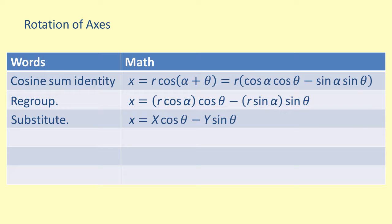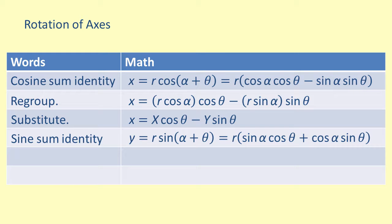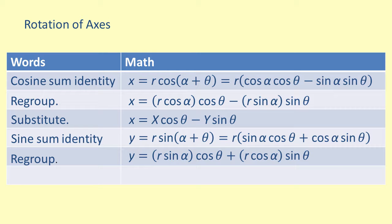We can then duplicate this process for the y term. Begin by writing the sine identity for a sum: y equals r times sine of the quantity alpha plus theta, equals r times the quantity sine of alpha times cosine of theta plus cosine of alpha times sine of theta. Eliminating parentheses and grouping r with the alpha terms, then substituting, gives us y equals capital Y times cosine of theta plus capital X times sine of theta.